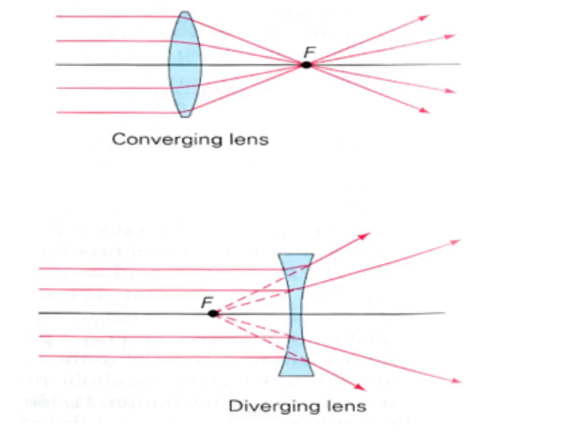The converging lens will focus the light beyond the lens to a focal point, whereas in the diverging lens the light is bent outwards with the focus point and hence the image being formed in front of the lens.